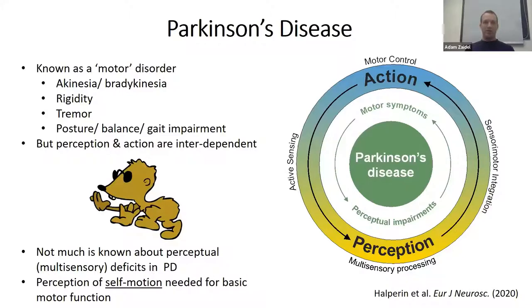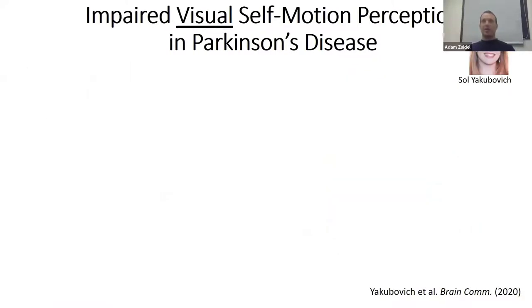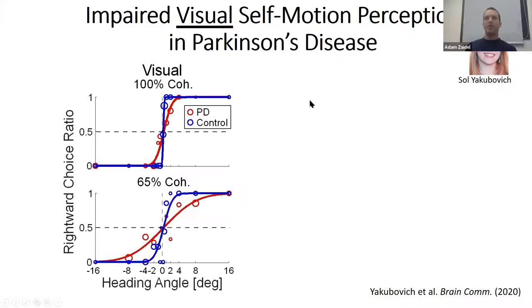This first dataset was done by Sol, who was a master's student in my lab. She found that visual self-motion perception — specifically visual — is impaired in Parkinson's. For example, looking at example curves, the Parkinson's group is in red and the control is in blue, and the Parkinson's curve is always less steep than the control.